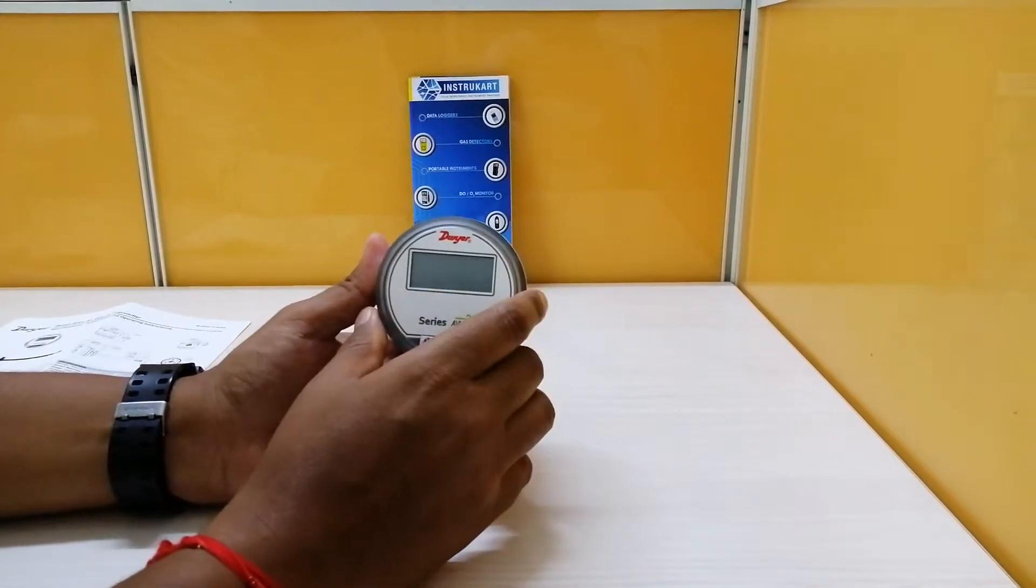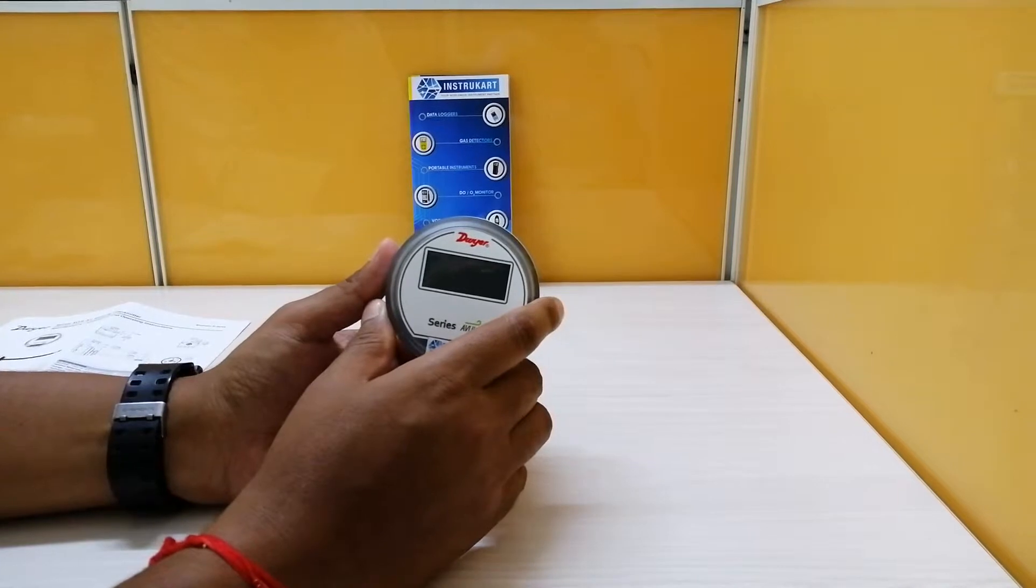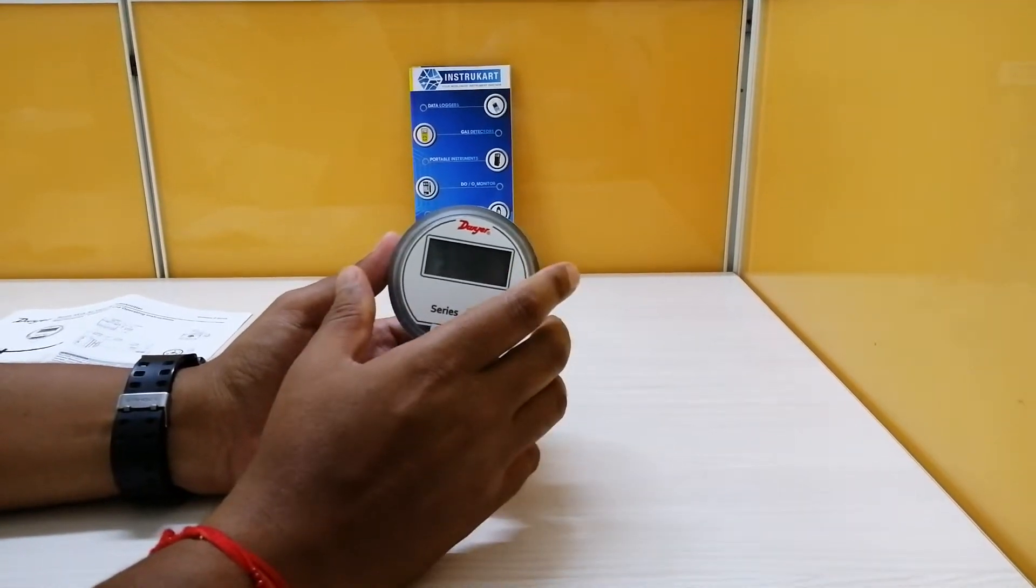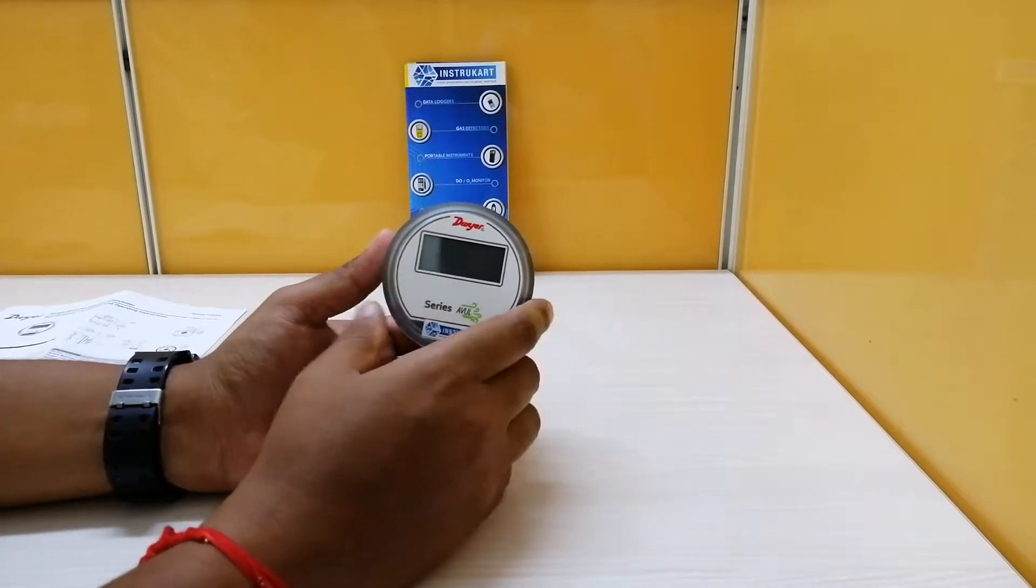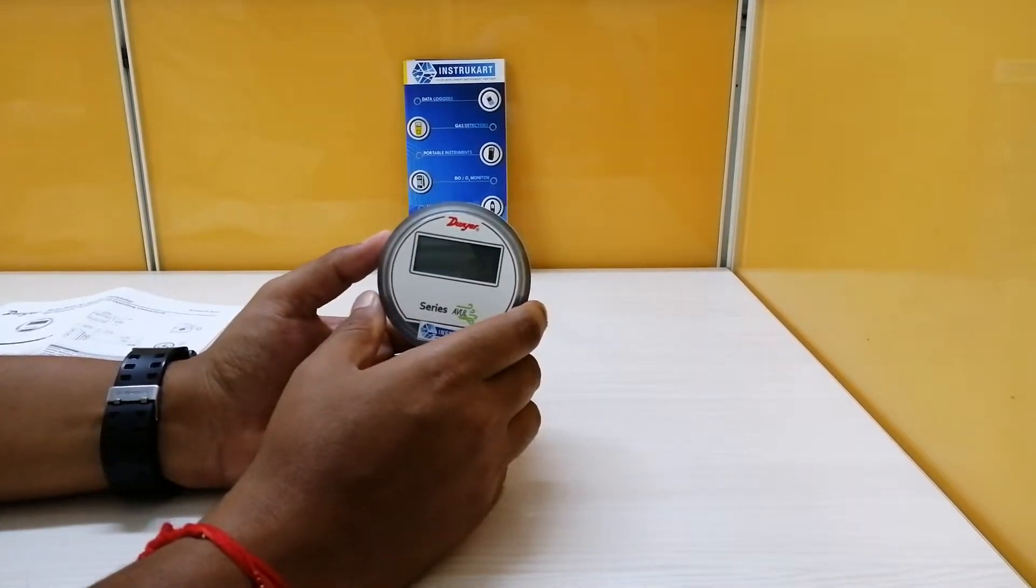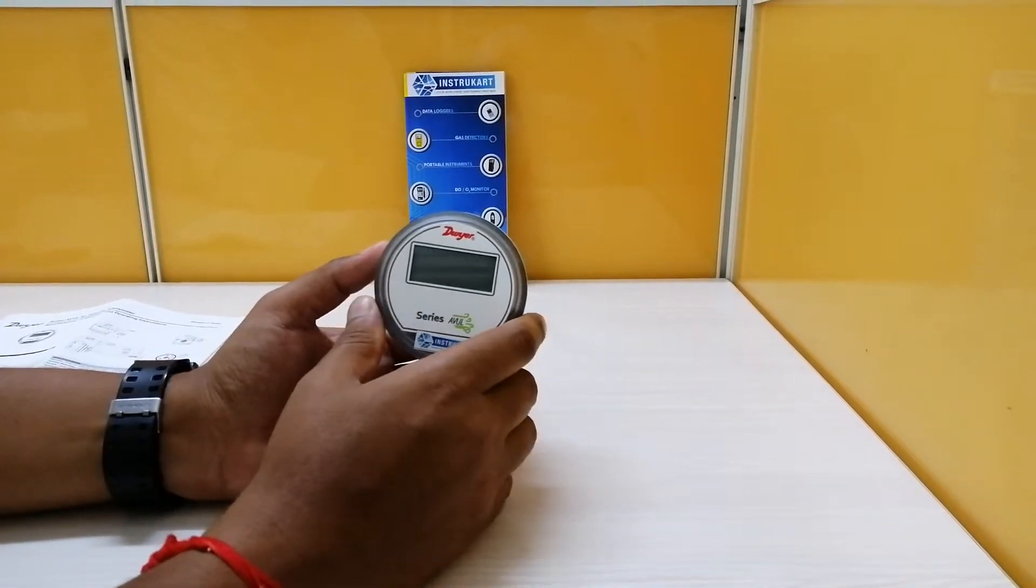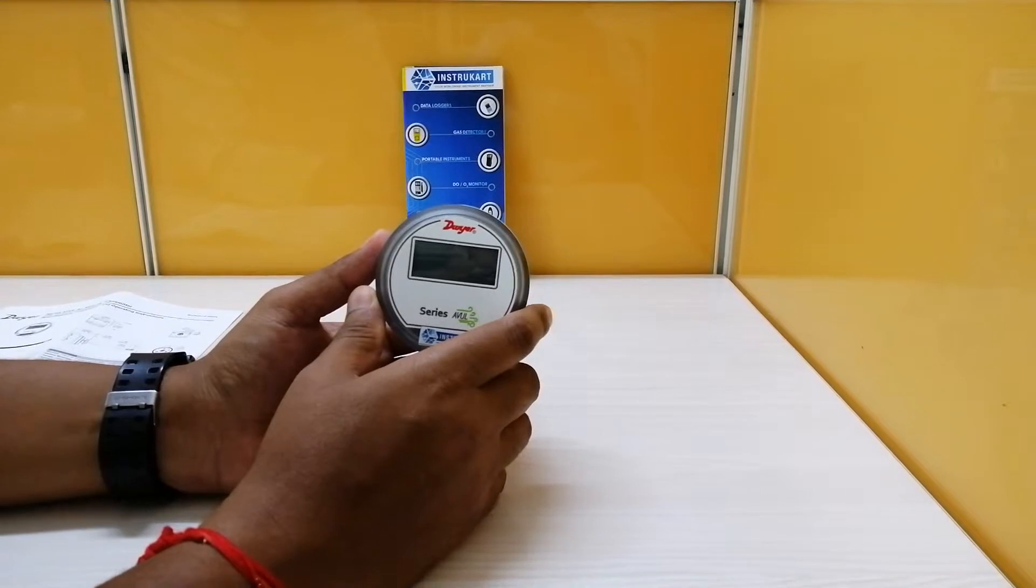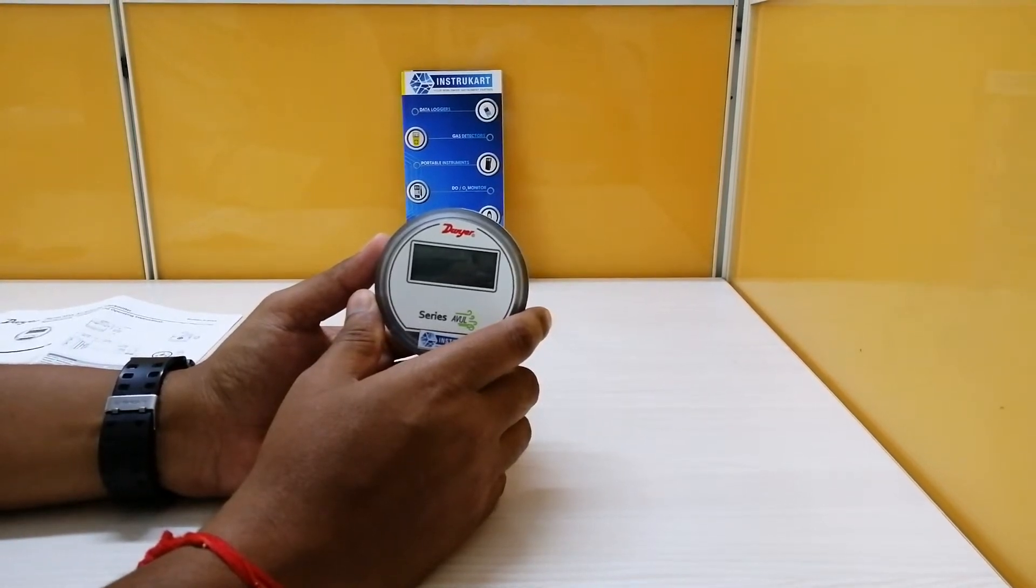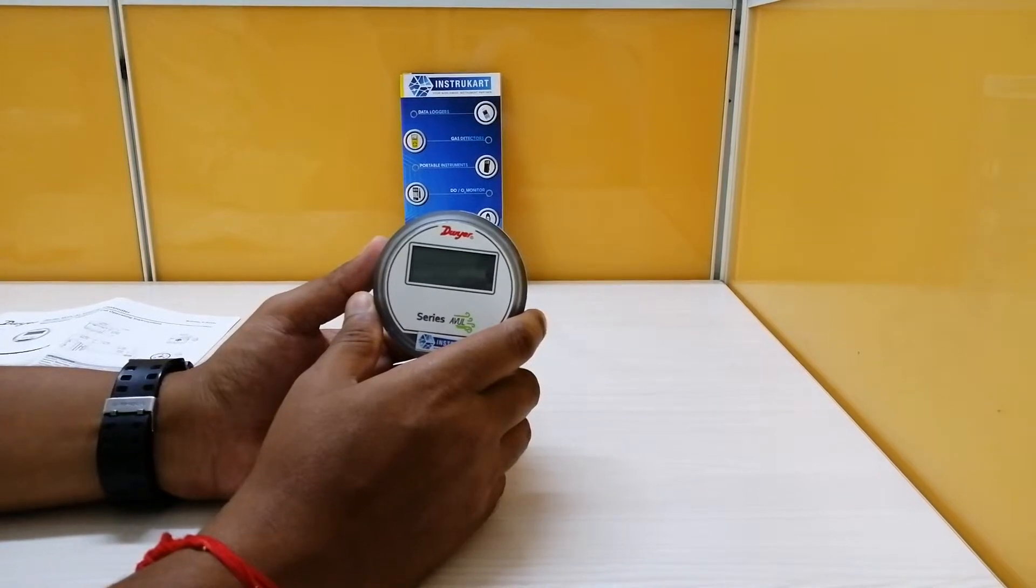This air velocity transmitter has a range of 0.0 to 5, 0 to 10, 0 to 15, or 0 to 20 meters per second, which can also be read as FPM. It has an accuracy of plus or minus 5% of reading or 0.2 meters per second.